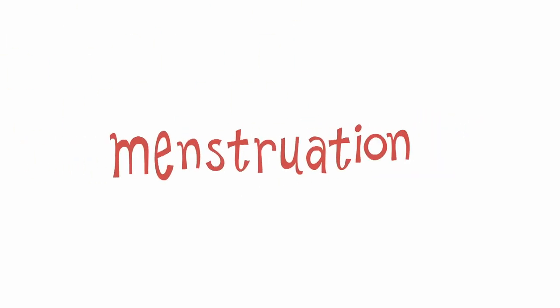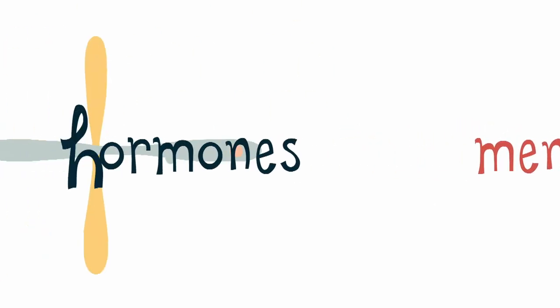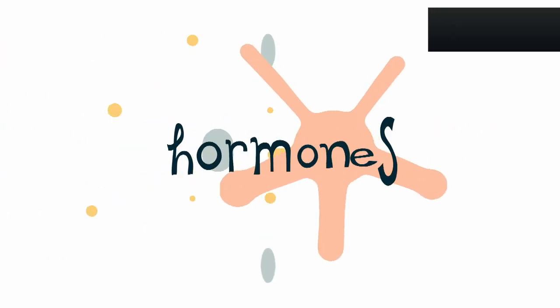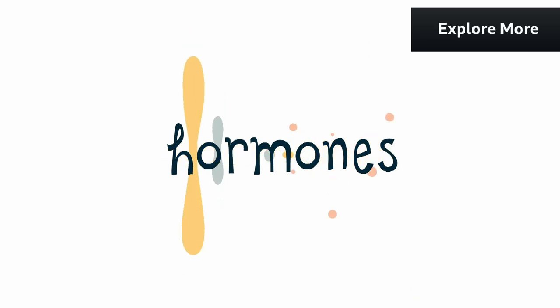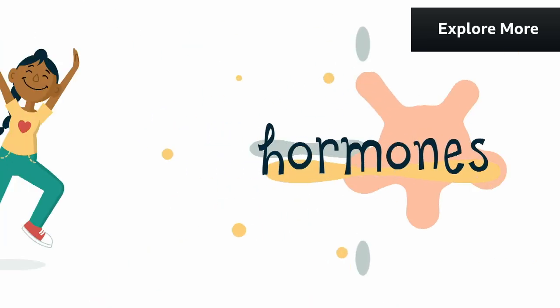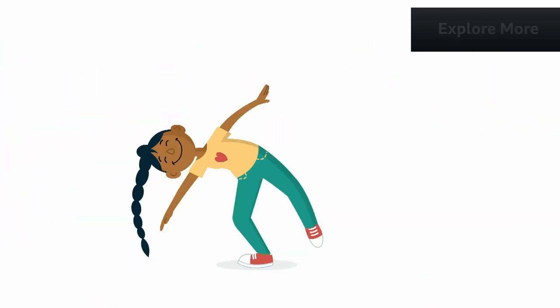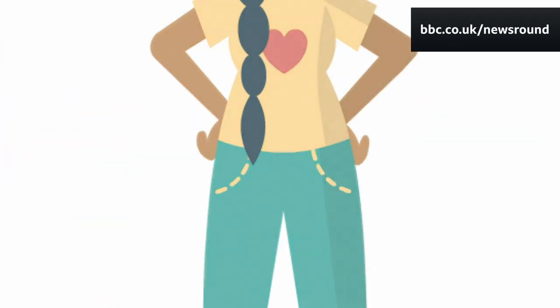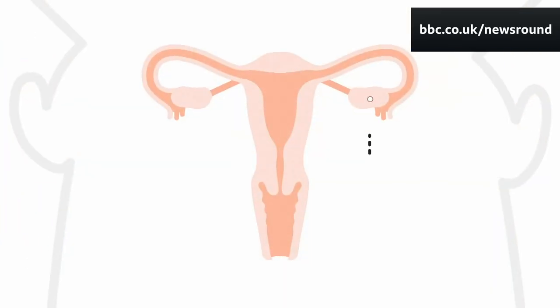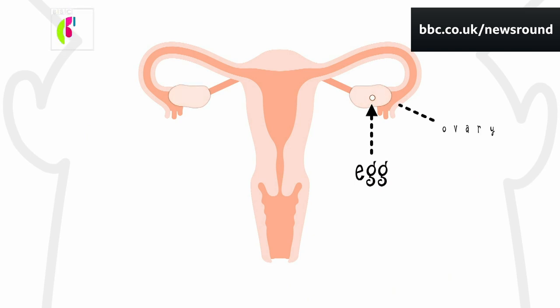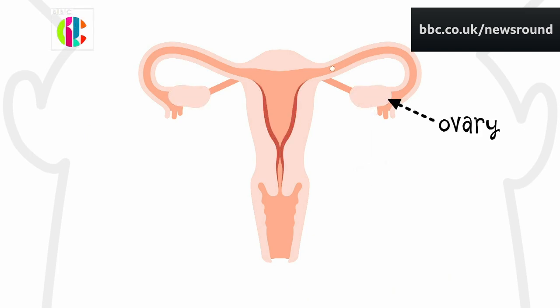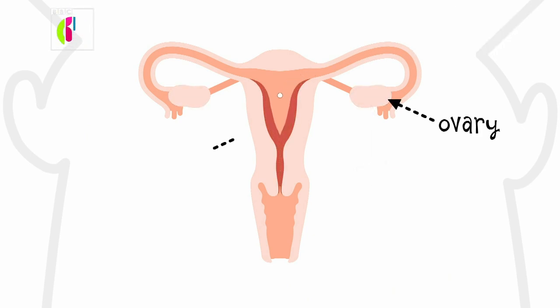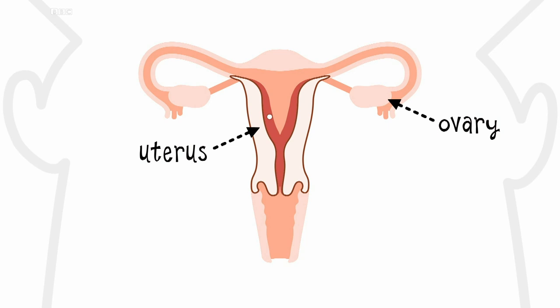Period is short for menstrual period or menstruation. A period happens because of changes in hormones in the body. These hormones cause ovulation, when an egg is released from one of the ovaries, and also cause the lining of the uterus to build up.